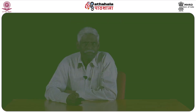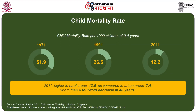Another mortality indicator with respect to age is early childhood, referring to 0 to 4 years. There is a clear reduction in child mortality, which was 51.9 in 1971 and has come down to 12.2 in 2011 — almost one-fourth of the earlier figure. Over nearly 40 years, this achievement indicates that to a great extent, the assurance for child survival exists in the country.